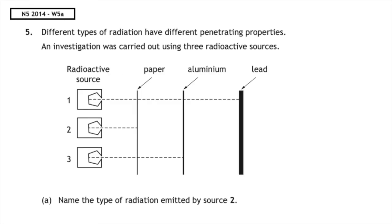This past paper question is from National 5, 2014, written question 5A. Different types of radiation have different penetrating properties. An investigation was carried out using three radioactive sources — the question asks: name the type of radiation emitted by source 2. Looking at all three: source 1 is stopped by lead and travels the furthest, so that is gamma. Source 2 is stopped by paper, so that is alpha. Source 3 must therefore be beta. The correct answer is alpha radiation.